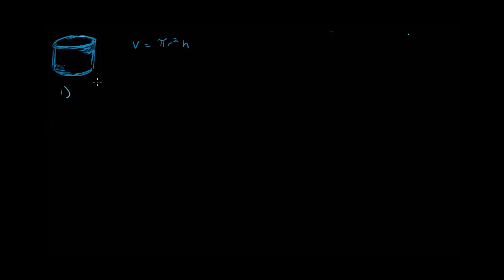The first scenario is when R is constant. If I pour liquid into this cylinder here, liquid would fill the cylinder up and create another cylinder — this purple cylinder right here. What would be changing as the liquid goes into the cylinder? Well, the height would increase and the volume would change. What wouldn't change is the radius. The radius of the liquid, no matter what level it's at, will always remain constant. So now I want to see how it plays out when I take the derivative of both sides with respect to time, because that's basically what you do in related rates equations.